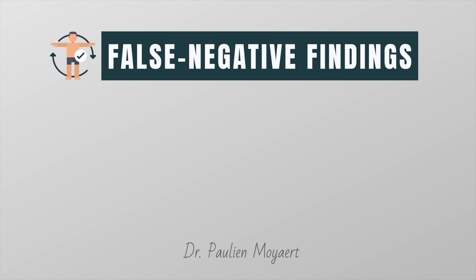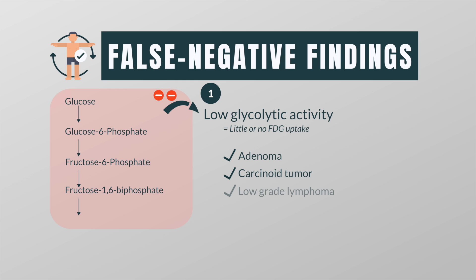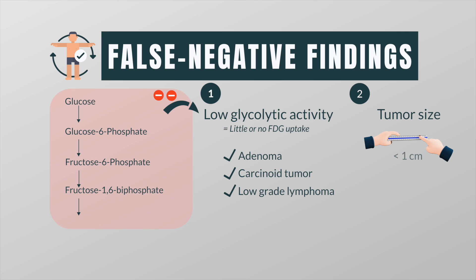On the other hand, tumors with low glycolytic activities — such as adenomas, carcinoid tumors, and low-grade lymphomas — are major causes of false negative findings. Another cause of false negative findings is tumor size: when lesions are smaller than one centimeter, they may not show high FDG uptake because of the one centimeter resolution of PET systems.